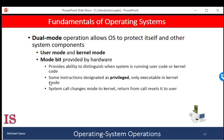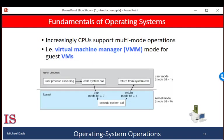When the computer system is executing on behalf of a user application, the system is in user-mode. However, when an application requests a service from the operating system — a system call — the system must transition from user to kernel-mode to fulfill the request, as shown in the figure. At system boot time, the hardware starts in kernel-mode. The operating system is then loaded and starts user applications in user-mode. When a trap or an interrupt occurs, the hardware switches from user-mode to kernel-mode, changing the state of the mode bit to zero.